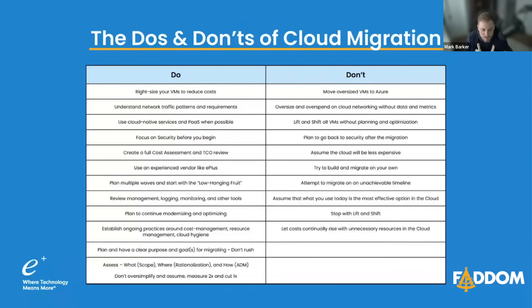Have a clear purpose and goals for migrating. This goes back to our number one pitfall — not rushing, making sure you have a clear plan of how you're going to get from A to Z. Assess the scope, the rationalization, and the how. Don't oversimplify and assume — measure twice and cut once so you don't burn yourself in the long run.